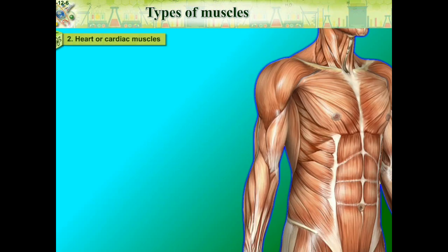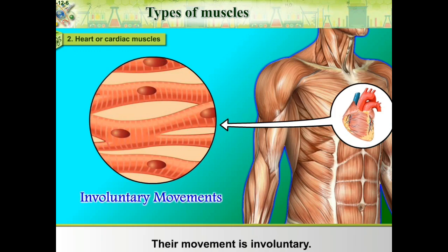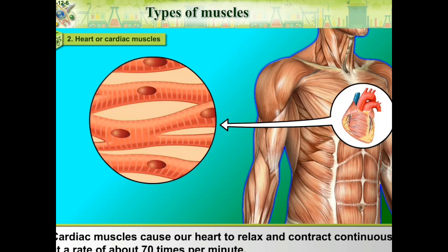Heart or Cardiac Muscles: These muscles bring about the contraction and relaxation — that is, the beating of the heart. Their movement is involuntary. Cardiac muscles cause our heart to relax and contract continuously at a rate of about 70 times per minute.